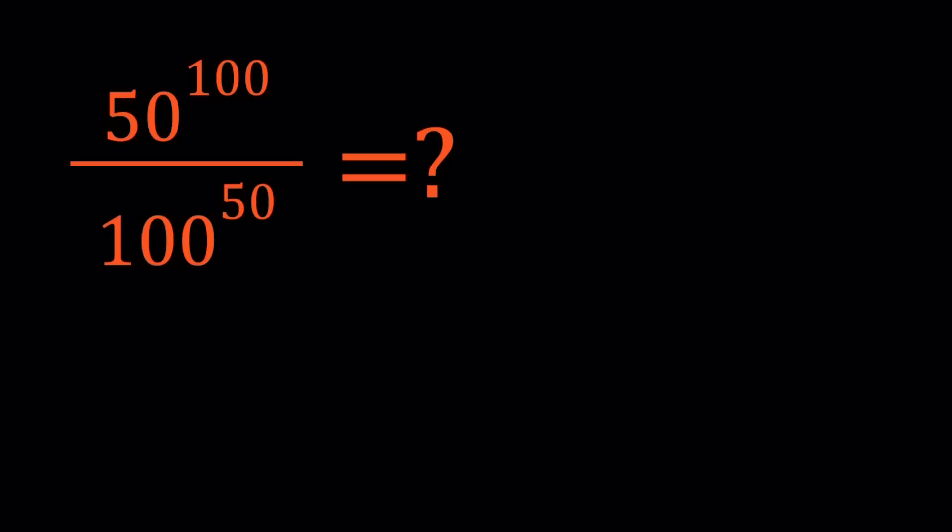Obviously, a lot of times when we have A to the B and B to the A, the number with a smaller base is usually smaller. Or maybe it's the other way around. But anyway, let's not spoil the surprise.